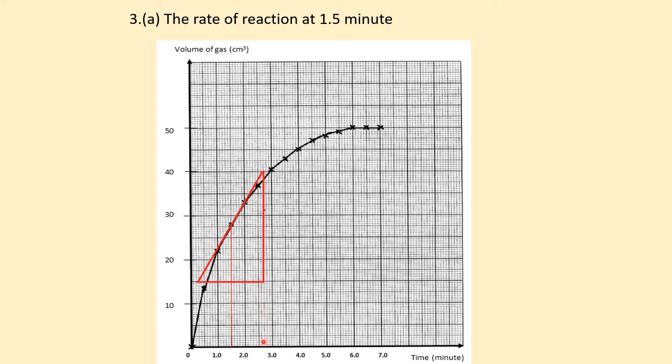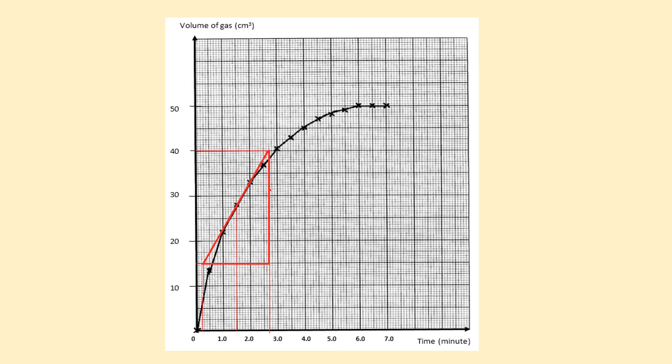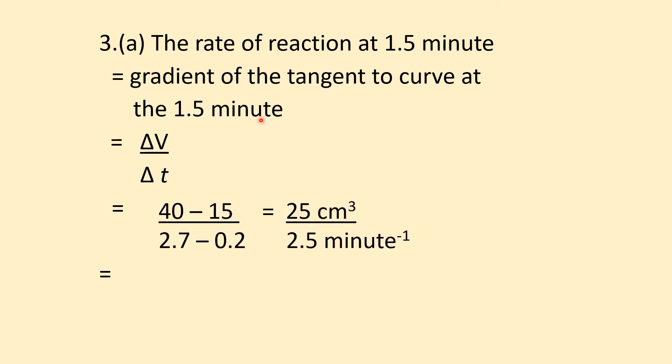For the triangle, read the coordinates: y2 = 40, y1 = 15, x2 = 2.7, x1 = 0.2. Your readings don't need to match mine exactly - there's an acceptable range. Calculate the slope: (y2 - y1)/(x2 - x1).